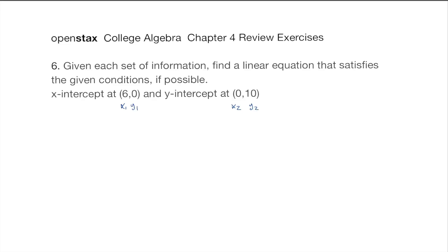Let's start by finding the slope. So slope m is y2 minus y1 over x2 minus x1. So slope m is going to be 10 minus 0 over 0 minus 6.